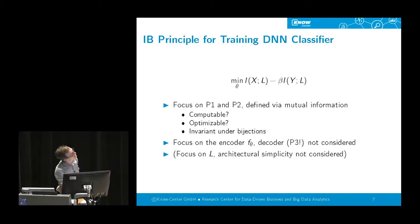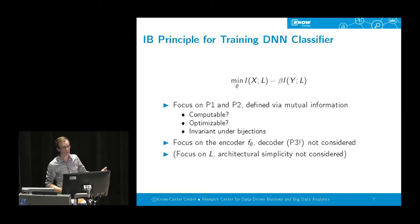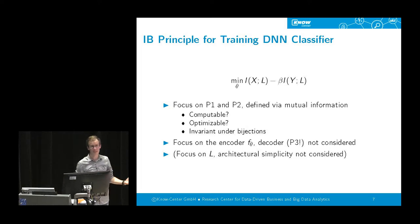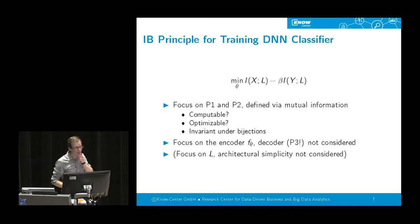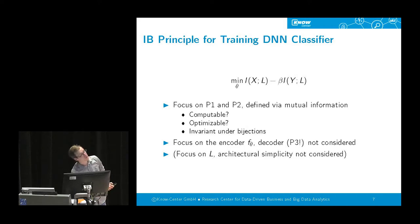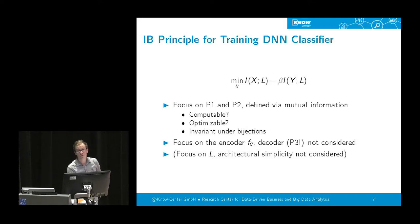We attack the information bottleneck principle for training neural networks on three perspectives. First, in many cases the information bottleneck functional is infinite, so it can't be used for optimization. Second, even when finite, it can't be optimized by gradient-based methods, which matters in deep learning. Third, because it is invariant under bijections, there is no reason why it should lead to simple representations or representations that are robust against noise. The simplicity issue is unsurprising: the compression term only depends on encoder parameters, so the decoder is not considered at all.